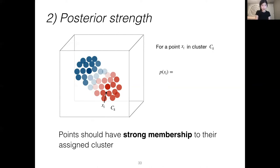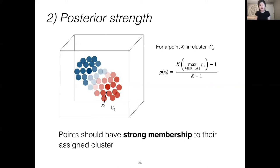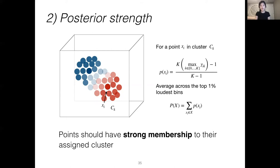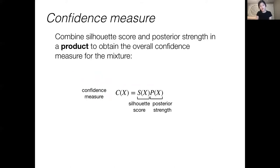We compute the posterior strength of x_i such that if a point has maximum posterior of 1/k — indicating equal assignment to all clusters — the numerator is 0 and the posterior strength is 0. If a point has a maximum posterior of 1, indicating full assignment to one cluster, the numerator is k minus 1 and the posterior strength is 1. Therefore, posterior strength ranges between 0 and 1. The overall posterior strength P(X) for the mixture is the mean posterior strength for the loudest 1% of TF bins. To combine the silhouette score and posterior strength into a single confidence measure, we multiply them together to ensure the overall score is high only when both components are high.